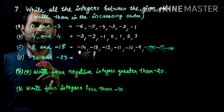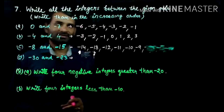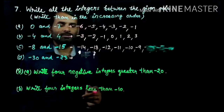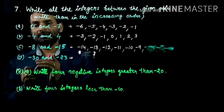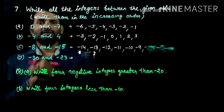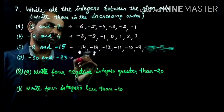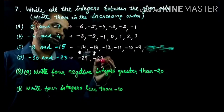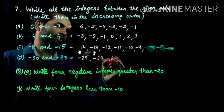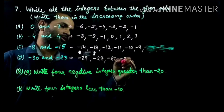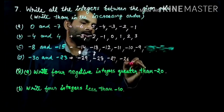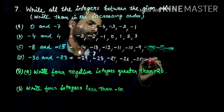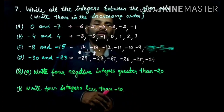Here we have minus 30 to minus 23. Minus 30 is the smallest number. The number 30 is big but minus 30's value is low. So we write: minus 30, minus 29, minus 28, minus 27, minus 26, minus 25, minus 24, then minus 23.